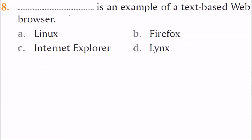Which is an example of a text-based web browser? Firefox is a well-known open-source browser. Linux is not a web browser — it is an operating system. We can select the answer by elimination. Lynx is an example of a text-based web browser, so D is the correct answer.